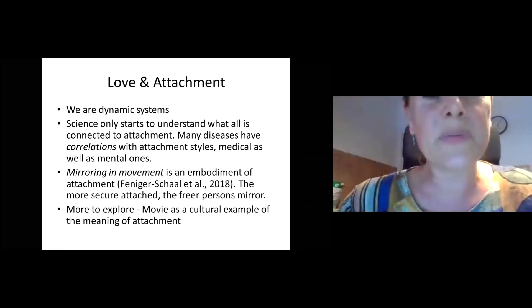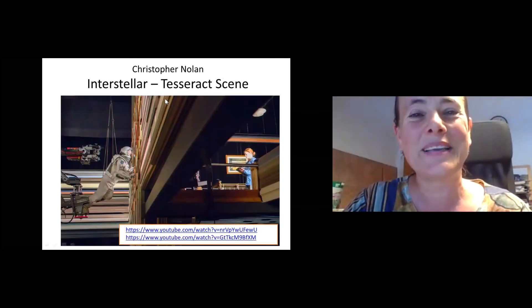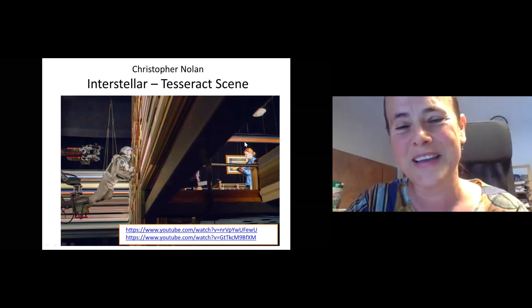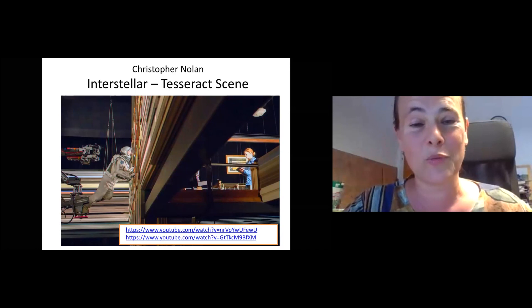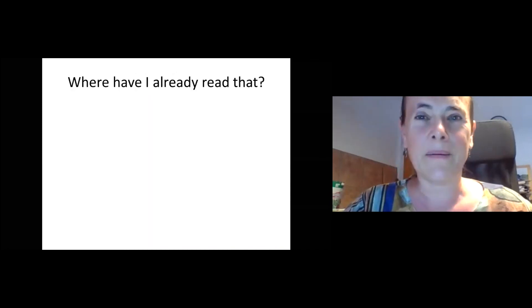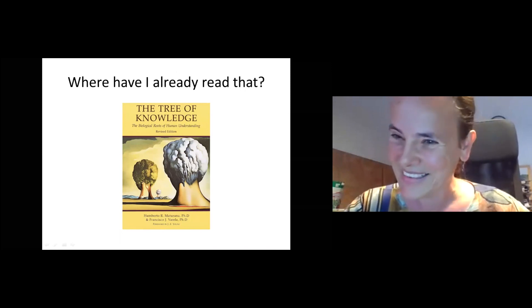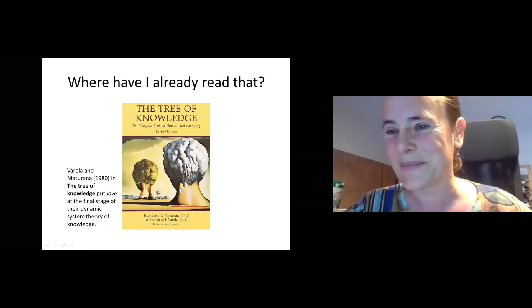Then I had brought a movie example which I don't go into, but I'm giving you a recommendation because there's a science fiction—Interstellar—that is really actually beautifully talking about these dimensions and also putting the dimension of love as a bridge in the end in order to save the world, of course, because it's a Hollywood movie. But anyway, it's very good to watch because it has this thought of attachment and love being our human dimension that can actually surmount time, space, and gravity and go beyond it. Where have I already read that? I've read that in a book of Varela and Maturana, I think, who are coming to a similar point in their final chapter. They're talking about love at the final stage of their dynamic systems theory of knowledge actually.